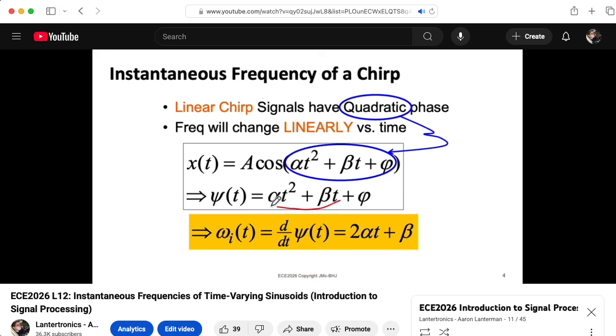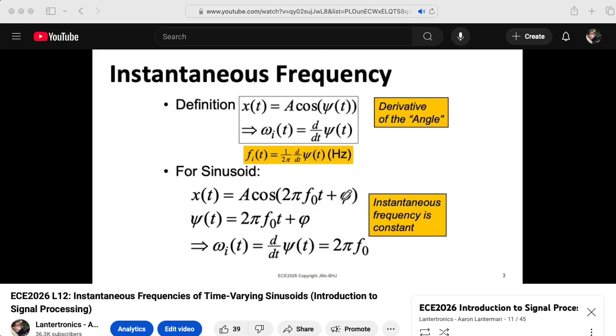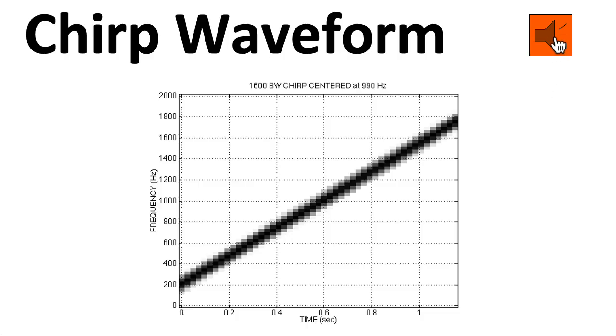we discussed sinusoidal signals whose frequency changed over time. In particular, we introduced the concept of instantaneous frequency. We looked at examples like this chirp waveform and note that what you hear corresponds to what you see on the spectrogram.